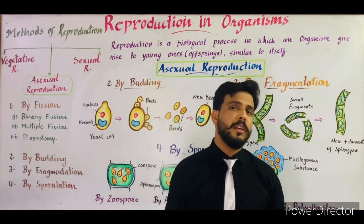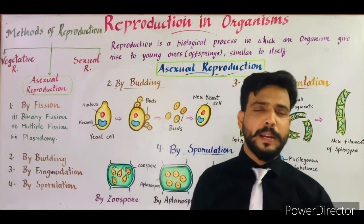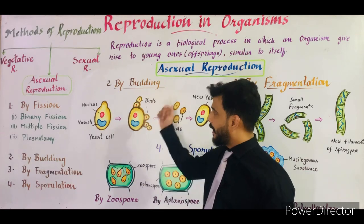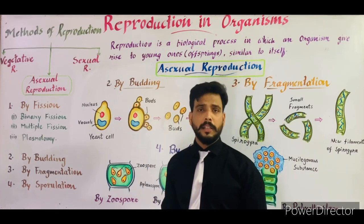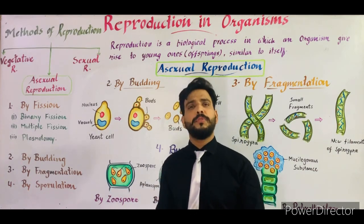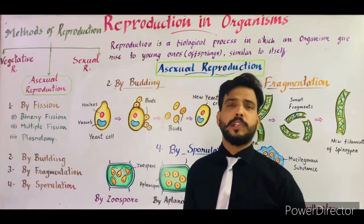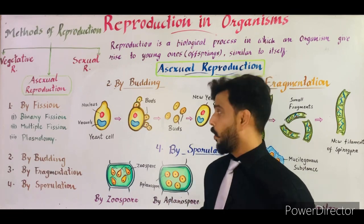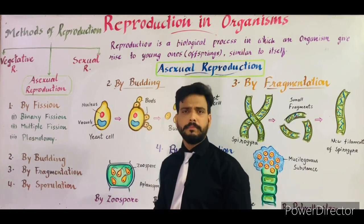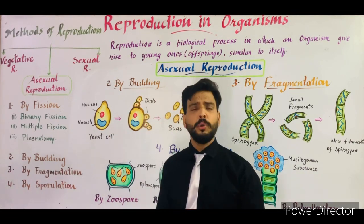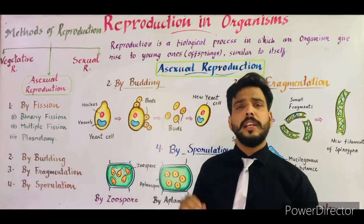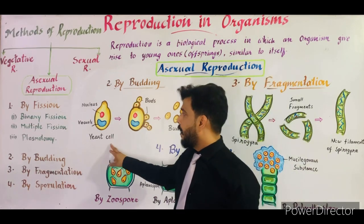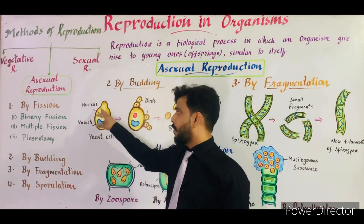First I'll tell you about budding. Budding is a special type of asexual reproduction which takes place in yeast. As we all know, yeast is a unicellular fungi. The yeast cell consists of a nucleus and a vacuole.